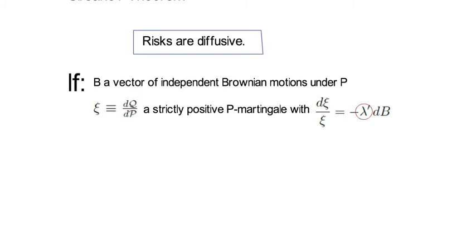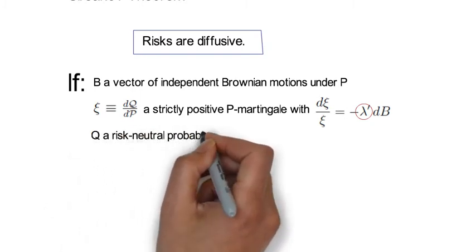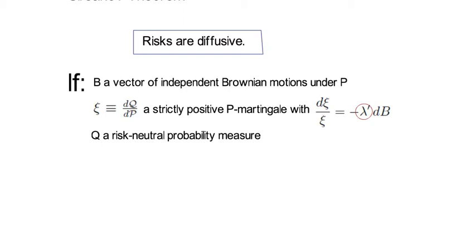and if third, Q is a risk-neutral probability measure, then Girsanov theorem states that B_t^Q,